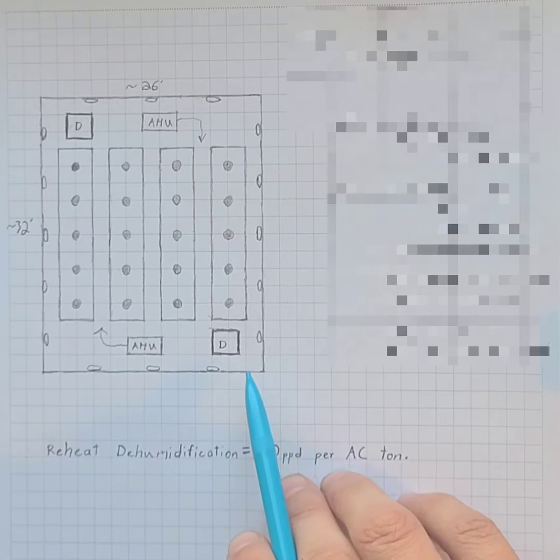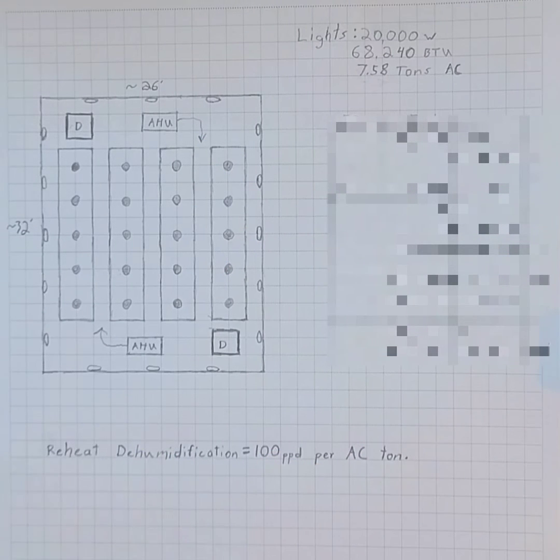So I just drew up this real quick example for you guys. It's a very typical room, a four table room with five lights on each table. So I've got 20 lights in here, about 20,000 watts or 1,000 watts each.